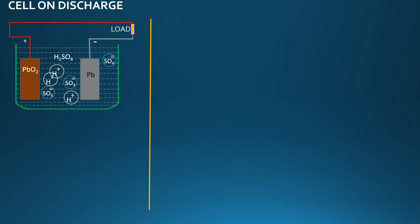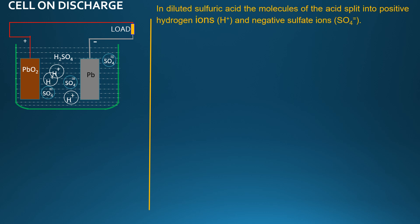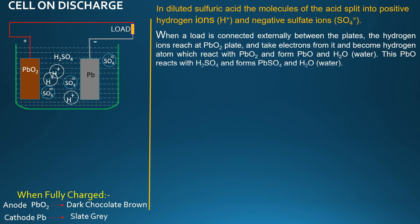Cell on Discharge: In dilute sulfuric acid, the molecules of the acid spread into positive hydrogen ions and negative sulfate ions. When the load is connected externally between the plates, the hydrogen ions reach the PbO2 plate and take electrons from it, becoming hydrogen atoms, which react with PbO2 and form PbO and water. This PbO then reacts with sulfuric acid and forms lead sulfate and water.